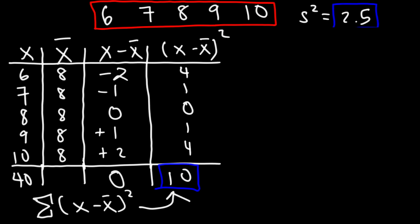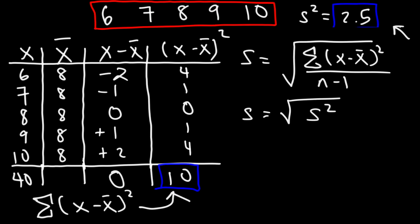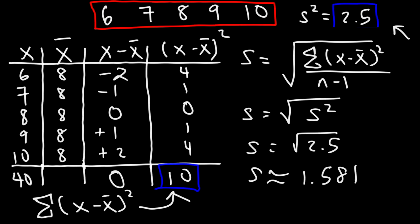Now let's calculate the standard deviation. The formula is the square root of the sum of the squared deviations divided by n minus 1. So the standard deviation is basically the square root of the variance, which we already have. It's the square root of 2.5, which is approximately 1.581. So now you know how to calculate the standard deviation and the variance of a sample.